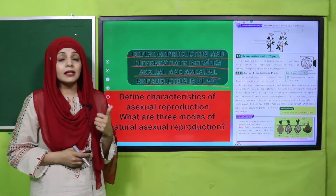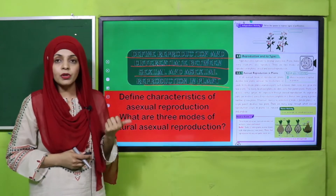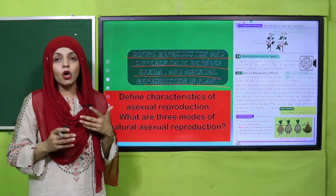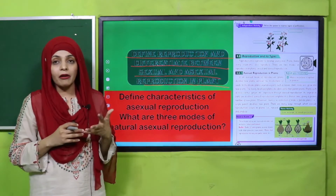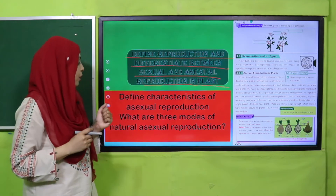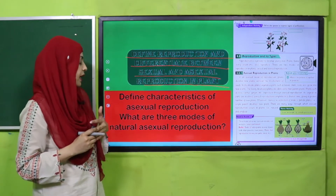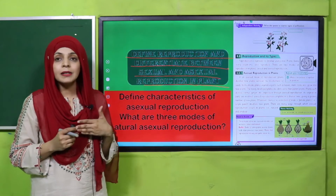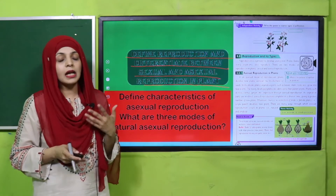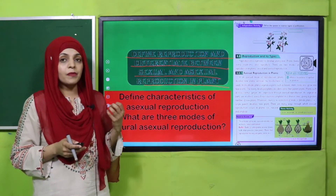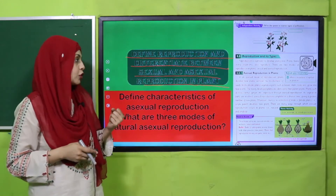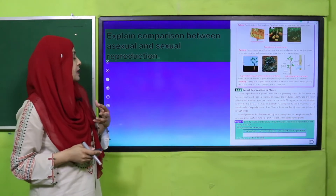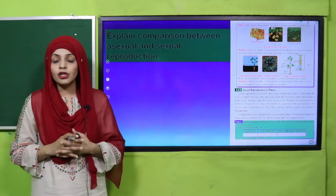Quickly define the characteristics of asexual reproduction. That is through bulbs, tubers, runners — and the artificial mode is grafting. The three modes of natural asexual reproduction are bulbs, tubers, and runners. My dear students, explain the comparison between asexual and sexual reproduction.